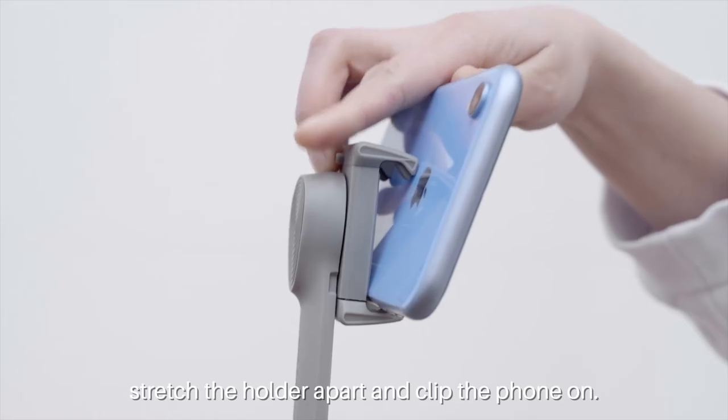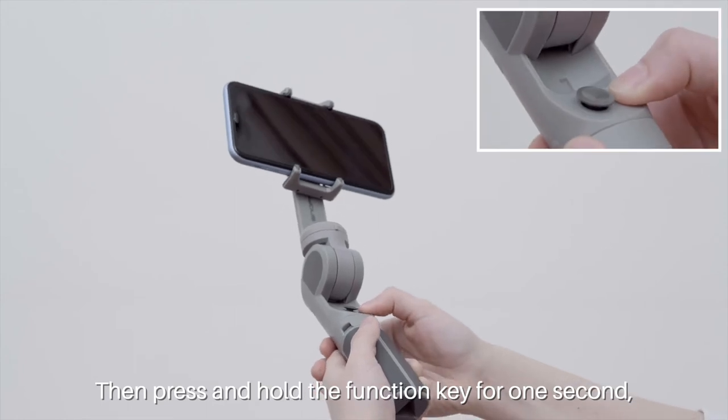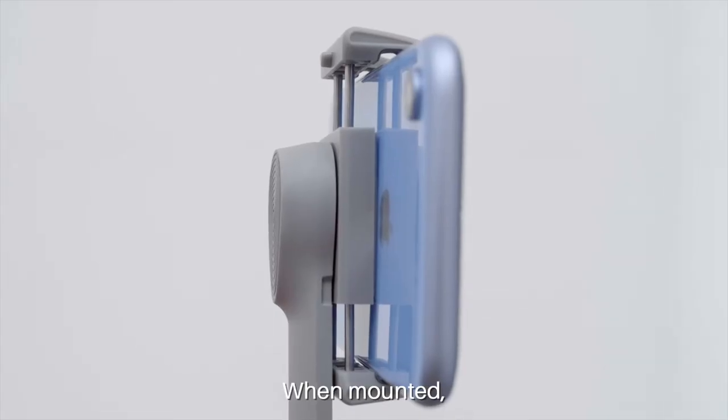To mount the phone, place it in the middle of the phone holder, stretch the holder apart, and clip the phone on. Then press and hold the function key for one second and the gimbal will enter the working mode.